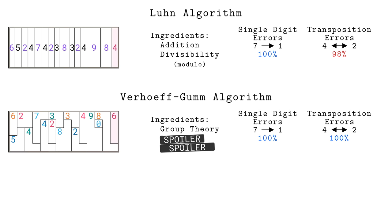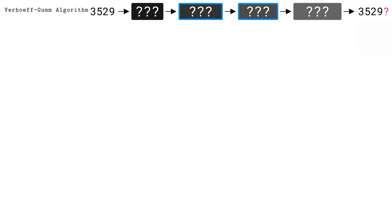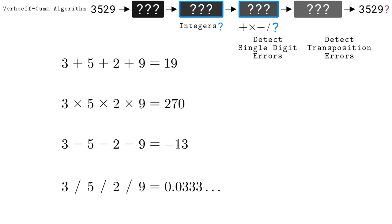As we attempt to rediscover the Verhoeff-Gumm algorithm, let's use the digits 3, 5, 2, 9 as the data we are trying to pack together in the hypothetical box. We need to do something to the digits to find a check digit that packs them all snugly together. That is, it makes the now 5 digits immune to the common single-digit and transposition errors. Thinking about the individual digits as integers, we can try some basic integer operations and see how they fare against single-digit and transposition errors.